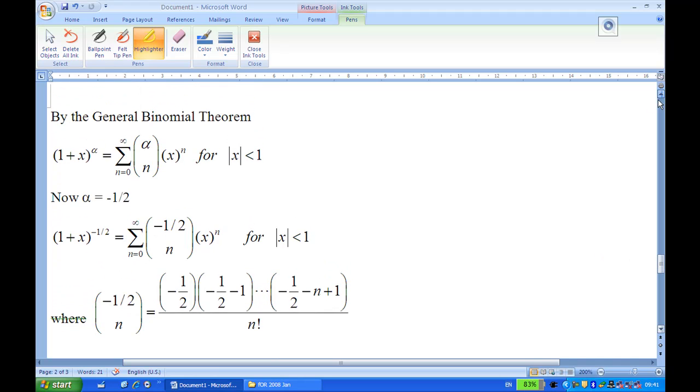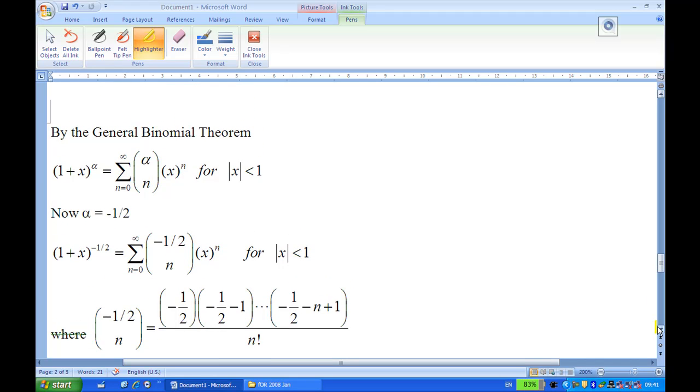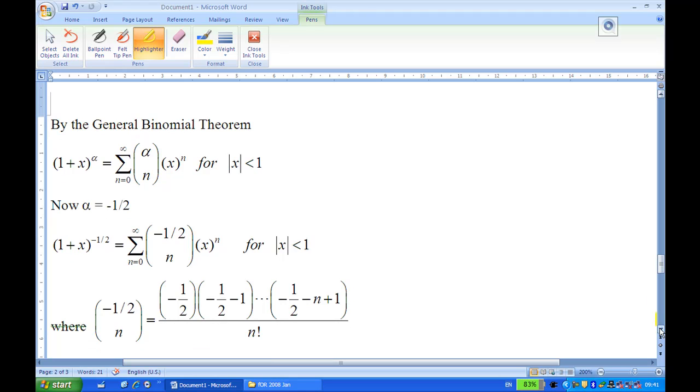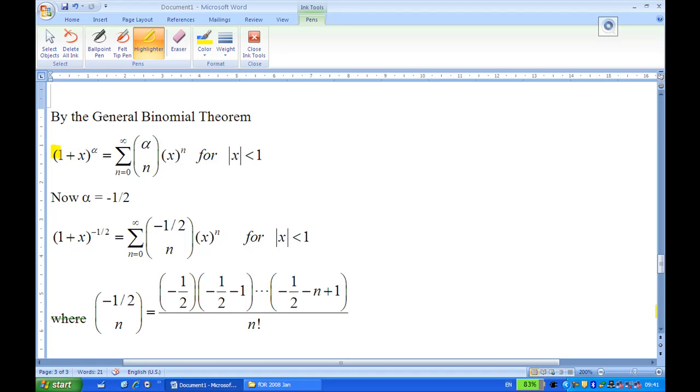The general binomial theorem says that if we have 1 plus x raised to the power alpha, this is equal to the summation of alpha choose n, times x to the power n, summing up for n equals 0 to infinity. And this is valid for the absolute value of x less than 1. In our case, alpha is equal to minus half.